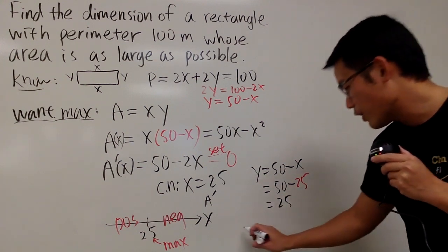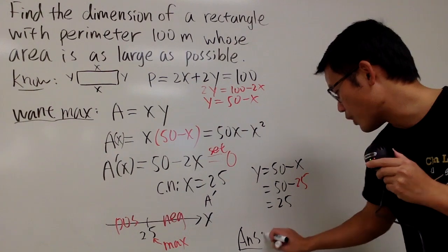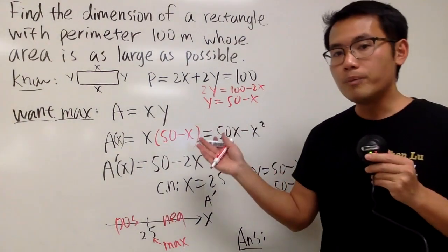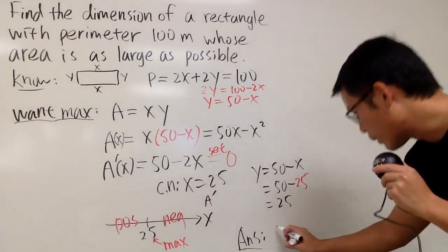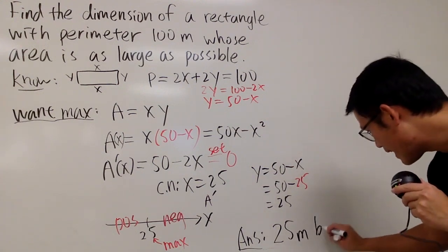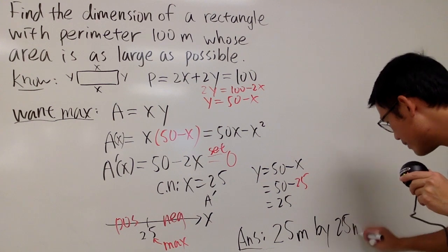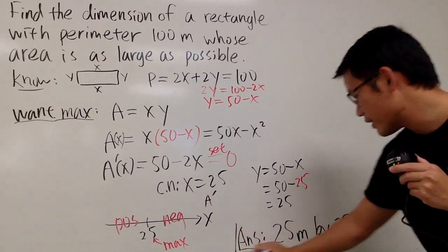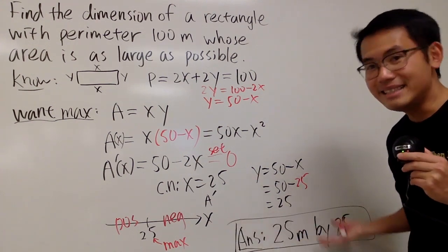Just like that. So this is how we can answer the question. We want the rectangle to be 25 by 25. So just say 25 meters, because we're talking about length right here, by 25 meters. So this right here is it.